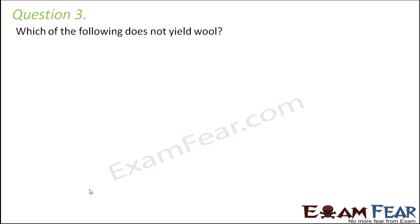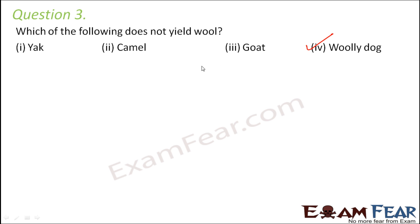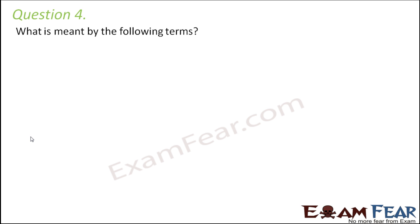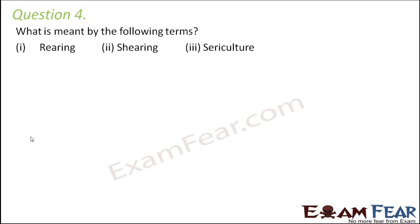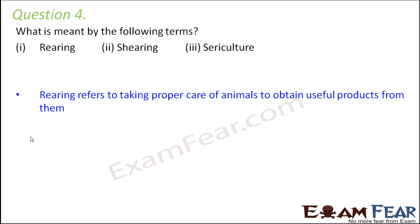Question number three: which of the following does not yield wool — yak, camel, goat, or woolly dog? The right answer is woolly dog, because yak, camel, and goat are all wool animals with a woolly covering on their body. Unless an animal has a woolly covering, it will not be able to yield wool.